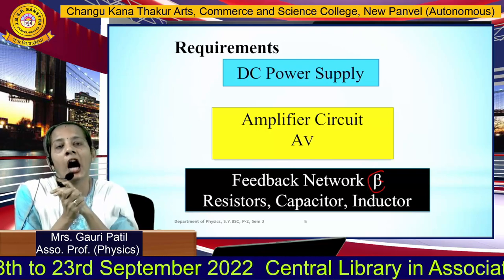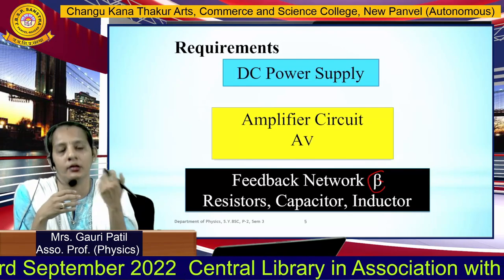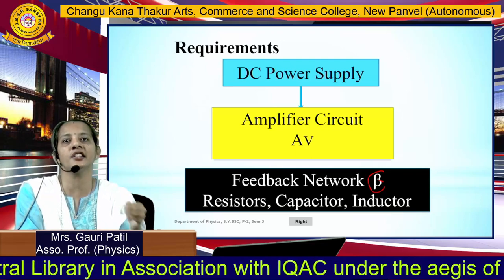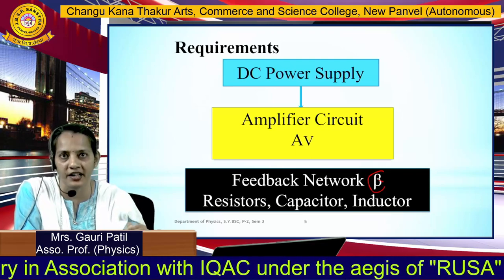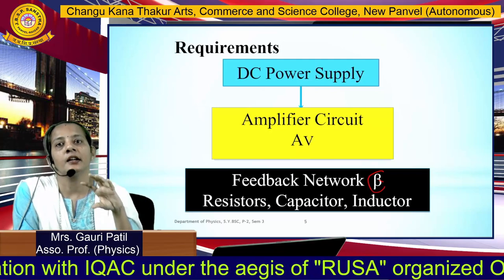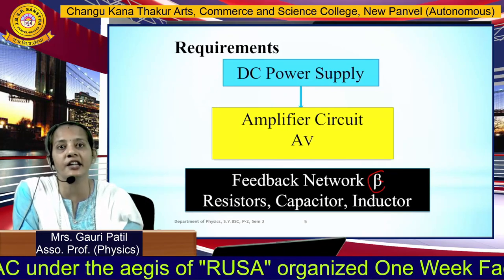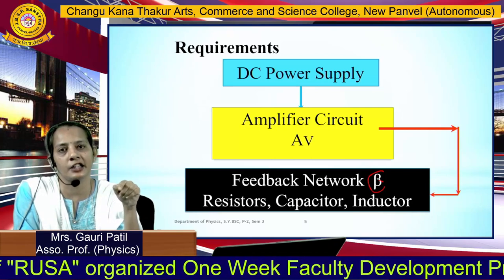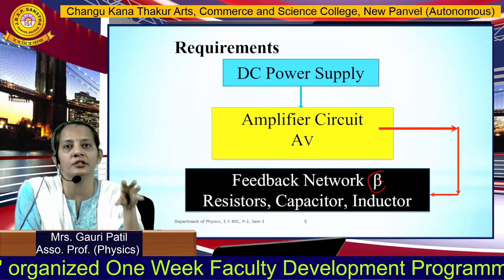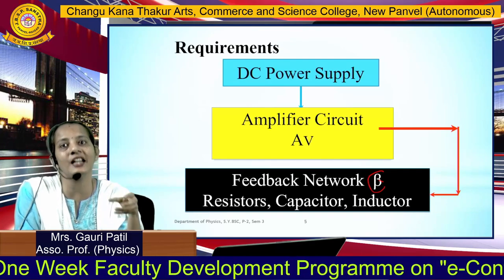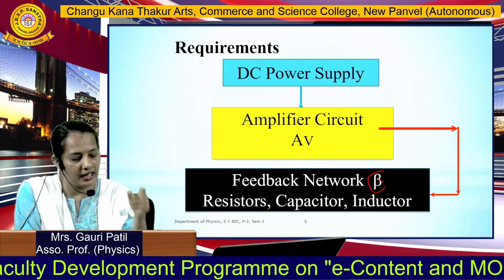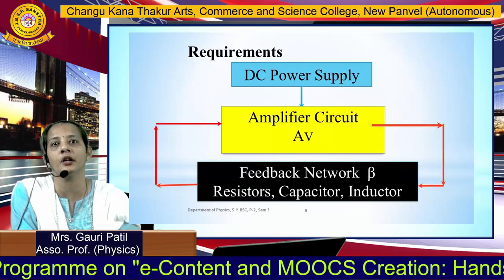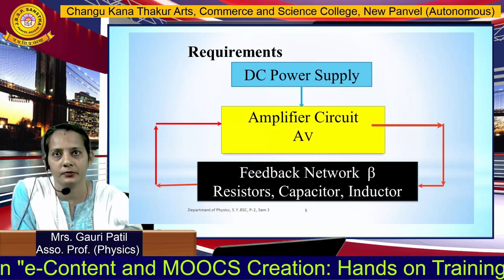The oscillator executes in this way: energy from the power supply is provided to the amplifier circuit. The amplifier performs amplification and passes the signal to the feedback network. The feedback network then feeds the signal back to the amplifier circuit.